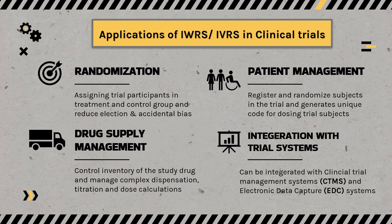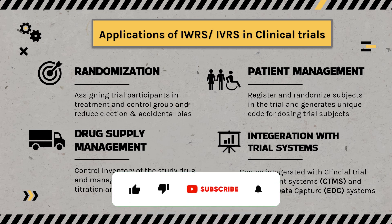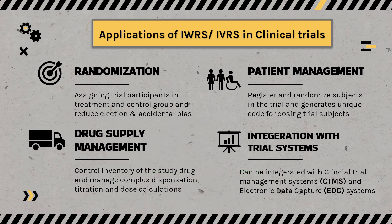So whenever a study is conducted, some people are assigned to the study group and some to a treatment or placebo group. To avoid bias — such as an investigator saying a particular subject should receive the IP for an advantage — a system of randomization is applied. To make it truly random, technology such as IWRS or IVRS is used, which is not under the control of any investigator. It randomly assigns participants to a treatment, placebo, or control group.